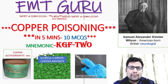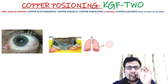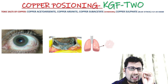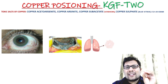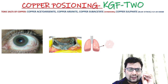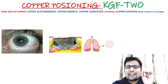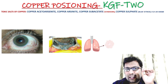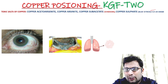Let's see about Copper Poisoning and its features. There are 3 compounds related to Copper Poisoning: Copper Aceto-Arsenate (Paris Green), Copper Arsenite (Sheely's Green), Copper Subacetate (Verdigris), and Copper Sulphate (Blue Vitriol). The fatal dosage is around 20 grams.